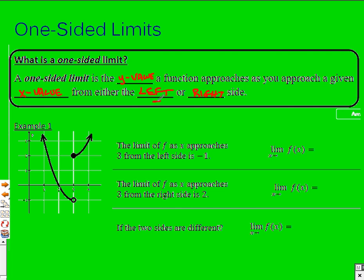We can call these the negative side and the positive side. For example, in this graph, the limit of f as x approaches 3 — if I look at the general limit as x approaches 3, not from the left or the right, I'd be approaching two different values. That can't happen — that limit does not exist.